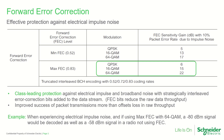As a practical example, when a radio is experiencing electrical impulse noise and using maximum FEC with 64-QAM, a -80 dBm signal would typically be decoded as well as a -58 dBm signal received by a radio that is not using FEC.